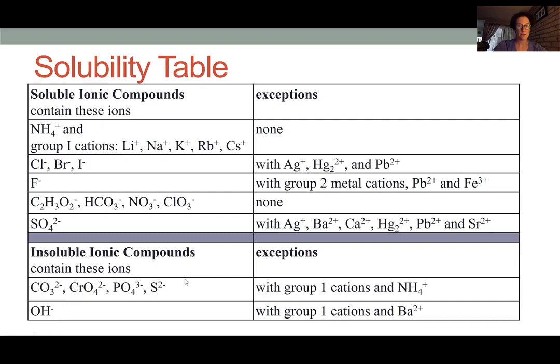The exception being the group 1 cations and ammonium. So basically, the exception being if it combines with ammonium, lithium, sodium, potassium, rubidium, and cesium. Because as we already saw on the top of the table, those cations are always forming soluble ionic salts.